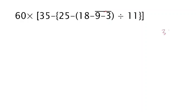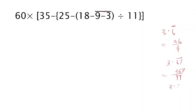That means 3.6 divided by 9, which equals a specific value. We calculate 36 divided by 9, which gives 4.